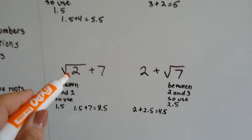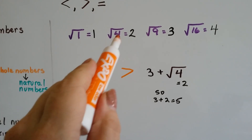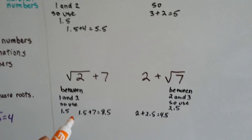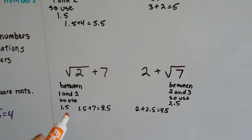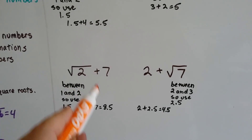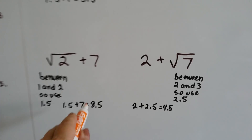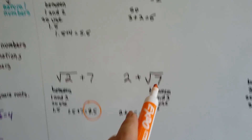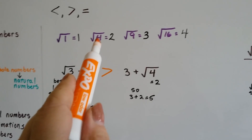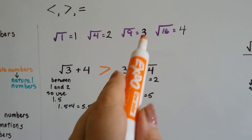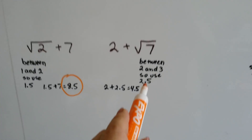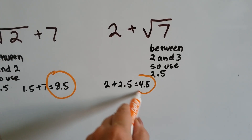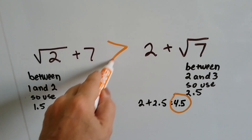The square root of 2 is between the square root of 1 and the square root of 4, so it's approximately 1.5. 1.5 plus 7 is 8.5. Now on the other side: 2 plus the square root of 7. The square root of 7 is between the square root of 4 and the square root of 9, so that's about 2.5. 2 plus 2.5 is 4.5. We can see that the left side — 8.5 — is greater.